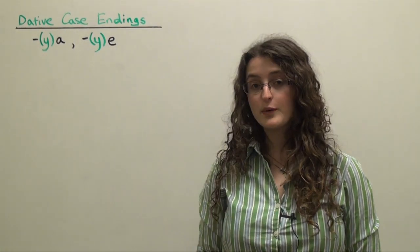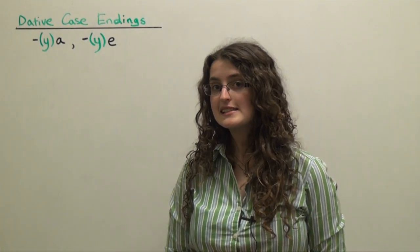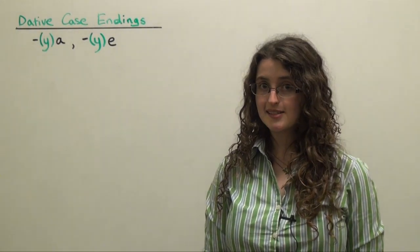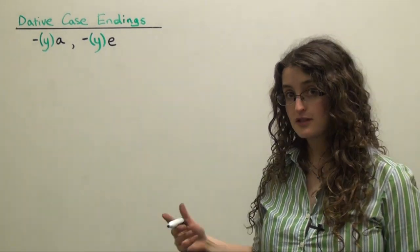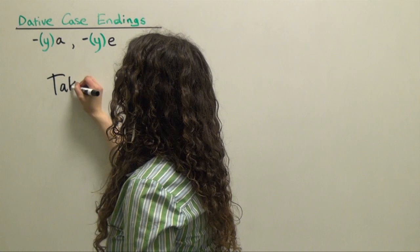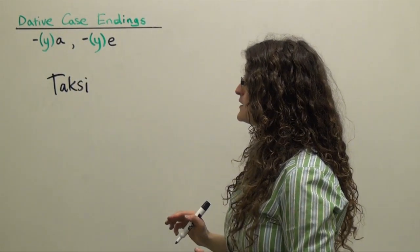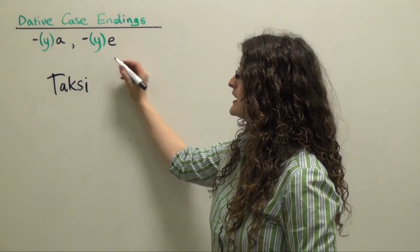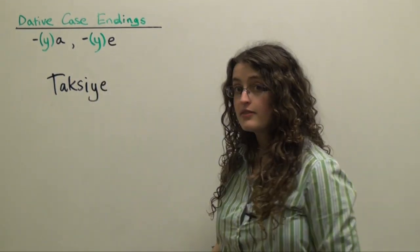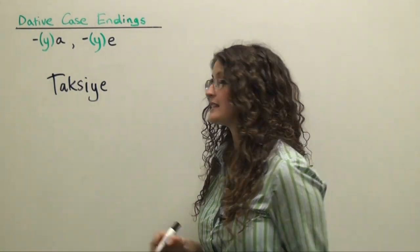Now we're going to talk about one way to express a need for something in Turkish. Let's say we want to say the sentence 'There's a need for a taxi.' We're going to start with the Turkish word for taxi, 'taksi,' and we're going to add the dative case ending 'ye' — 'taksiye.' Then we're going to add the Turkish word for a need: 'ihtiyaç.'